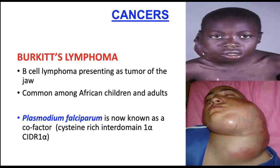The greatest risk factor elsewhere is HIV. There are three types of Burkitt's lymphoma: sporadic, endemic, and immunodeficiency-related. The endemic type is common in Africa near the equator, associated with chronic malaria and Epstein-Barr virus. The facial bones and jaw are the most commonly affected parts.